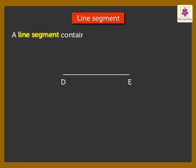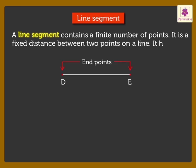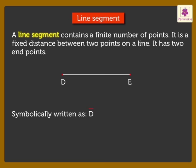Line Segment. A line segment contains a finite number of points. It is a fixed distance between two points on a line. It has two end points. Here, DE is a line segment. It is written as DE or ED.